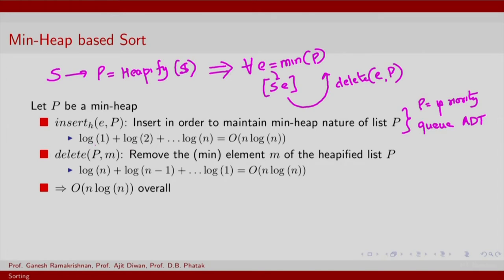For every insertion you traverse the height of the existing tree. Initially the tree is very small, so you traverse log 1, then log 2, and so on up to log n — this is O(n log n). Similarly, deleting element e from P is done by removing the min element and pushing it into sequence S. Removing the first element costs O(n), then log(n−1), and so on — again eventually O(n log n). So the overall complexity is O(n log n).